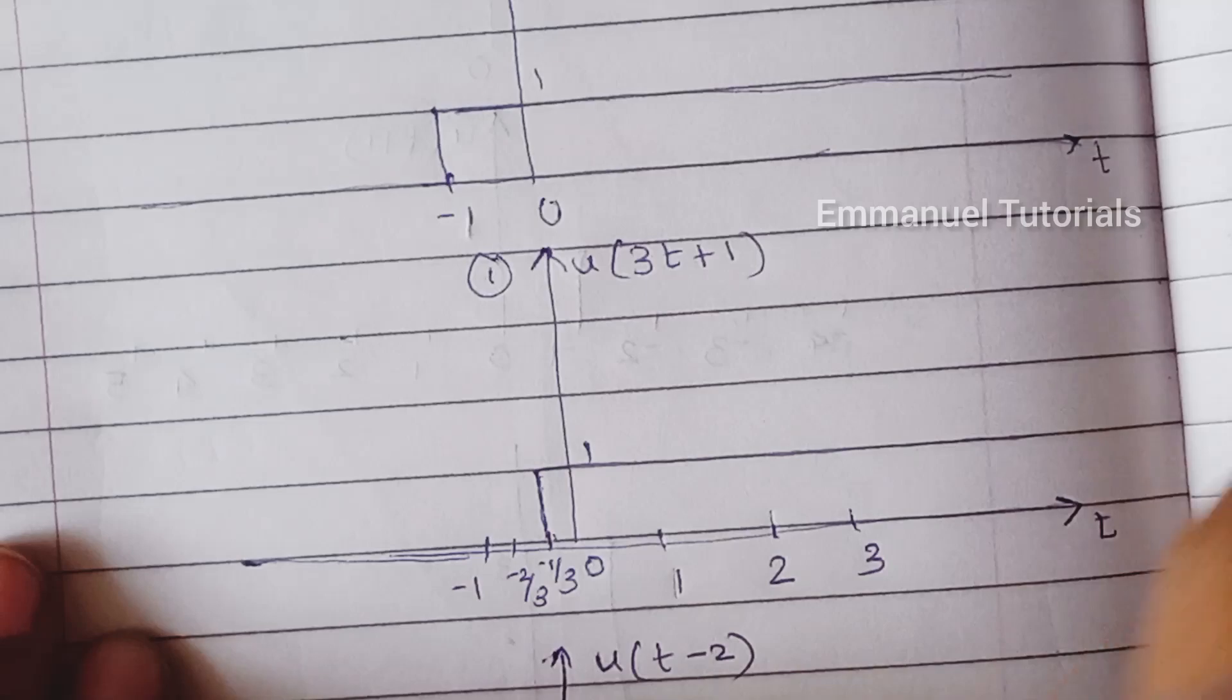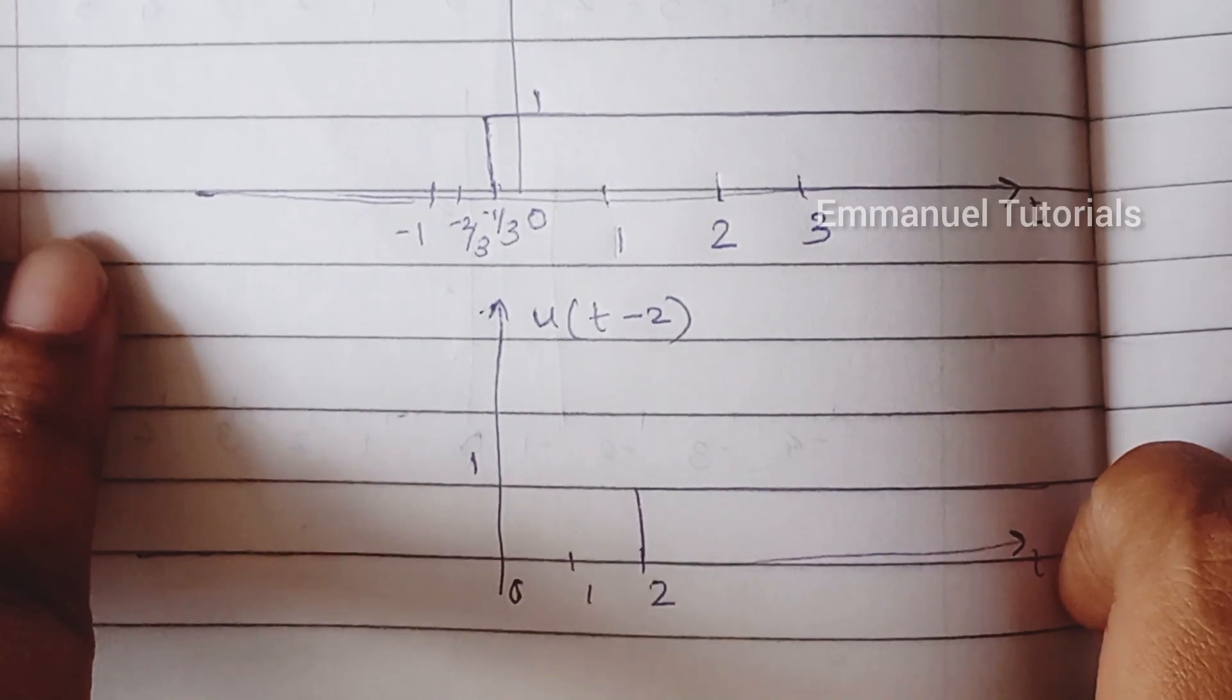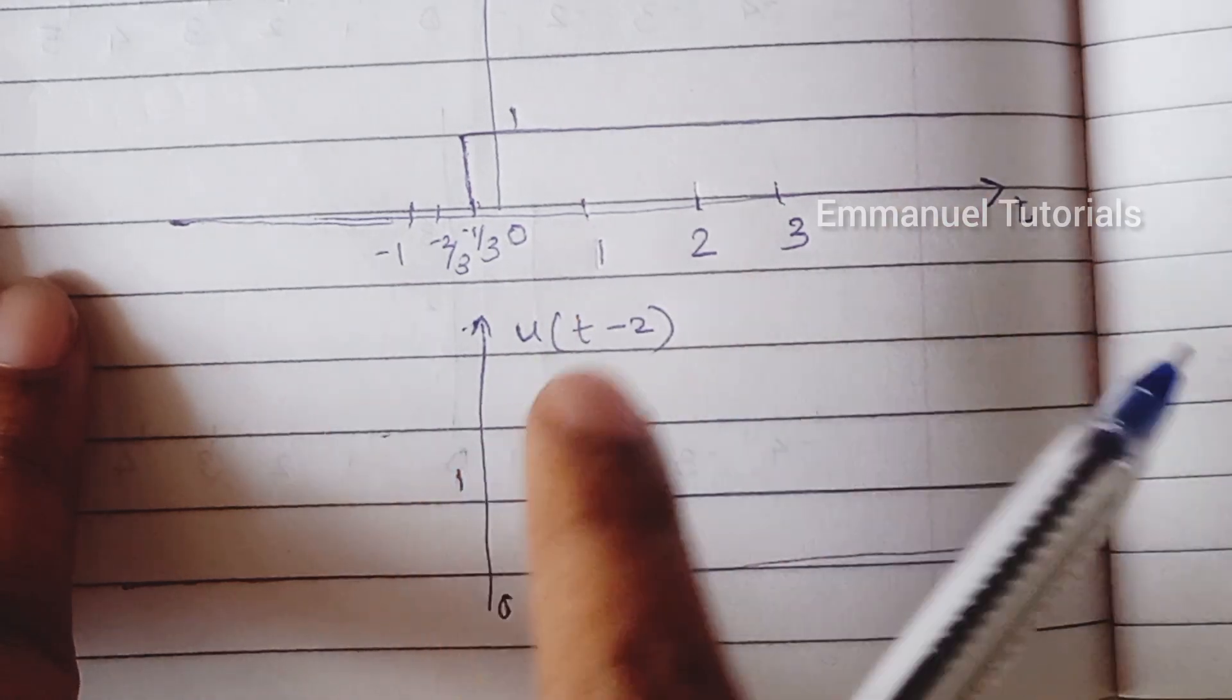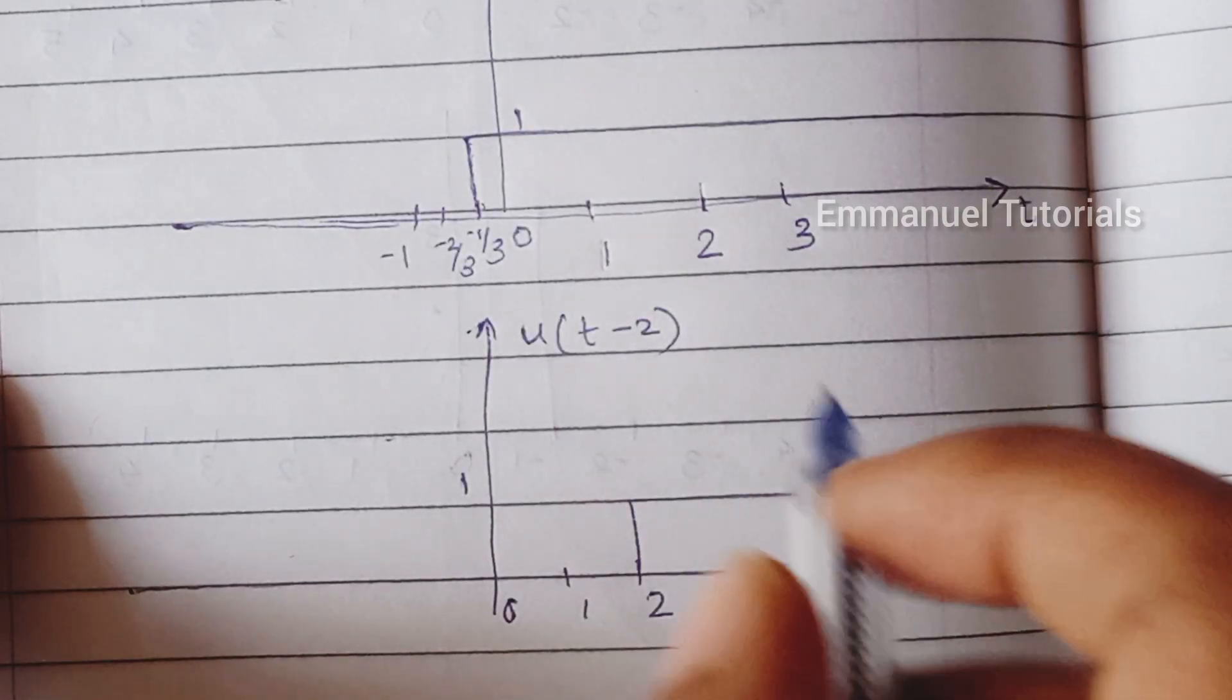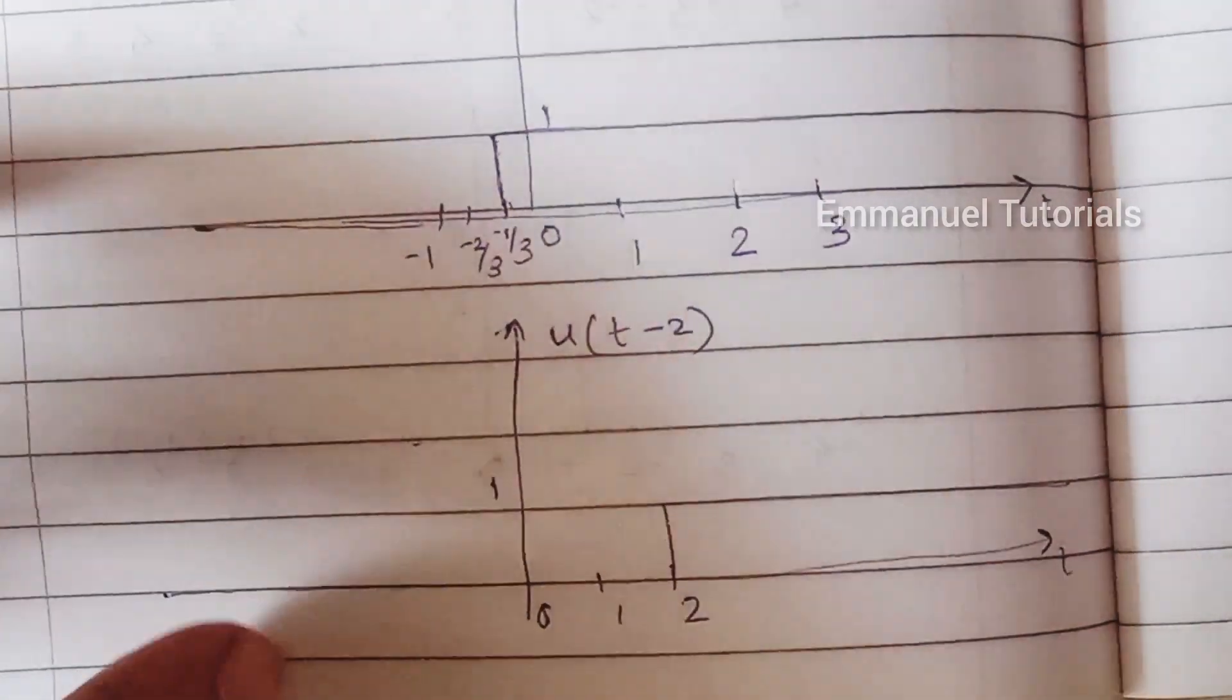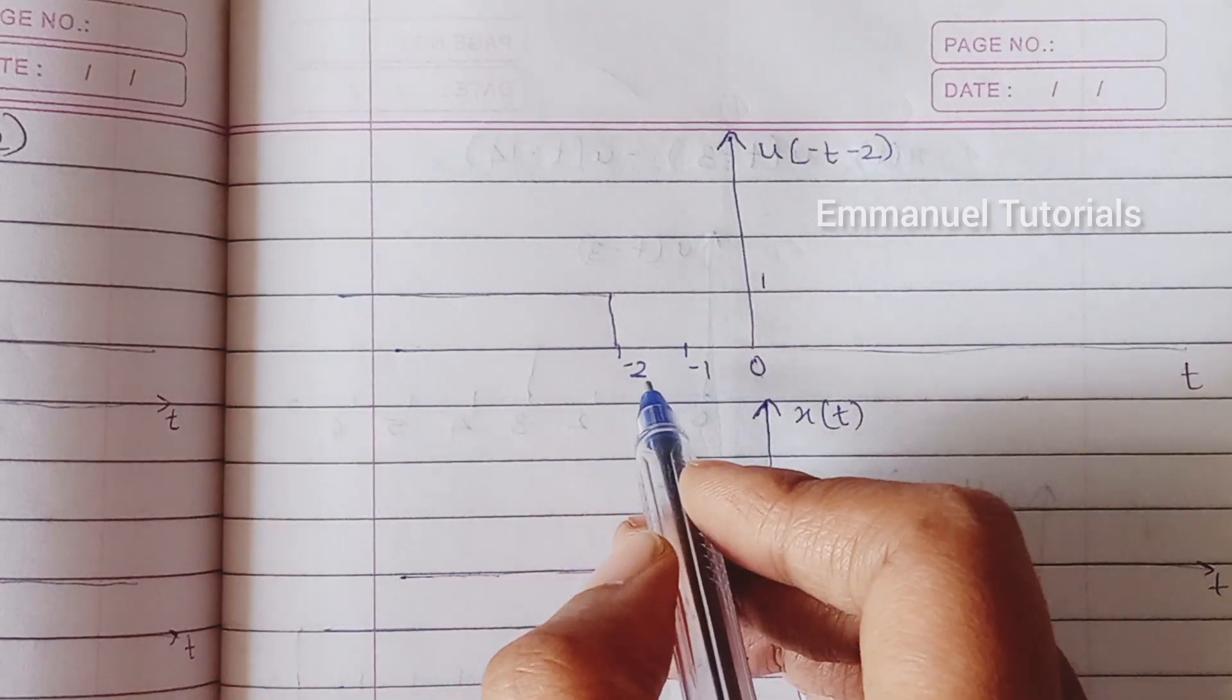Now for the next part which is u of minus t minus 2, again we will be doing first shifting. Shifting will be the unit step signal to the right by 2 because it's a delay, and this signal we need to reverse because you need to get u of minus t minus 2 right, and reversal is the last step we have to do in precedence rule. So we will just be reversing the signal across the y axis. So what will happen, the signal will start from minus infinity and end at minus 2. So here you can see the signal starts from minus infinity and ends at minus 2.